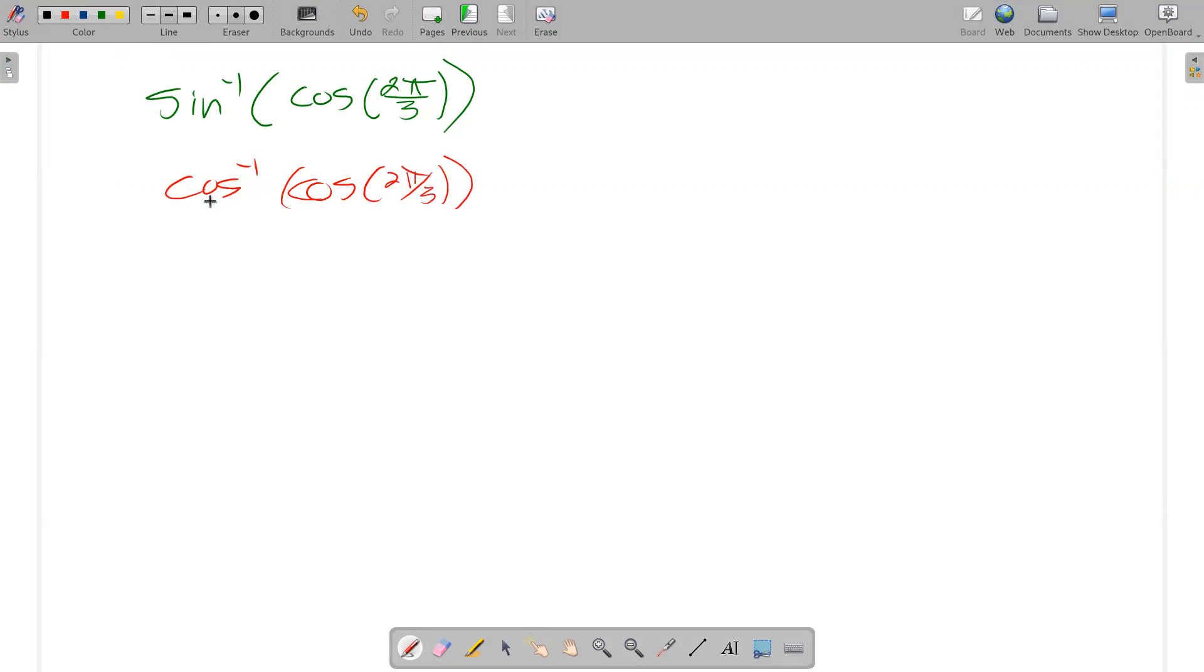I know the whole purpose of the cosine inverse is to undo what the cosine does, so the answer there, if that's in the right quadrant, should be 2π over 3.